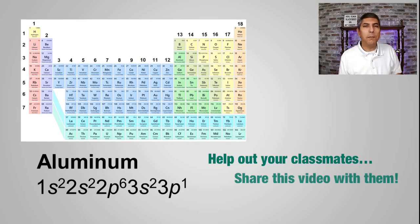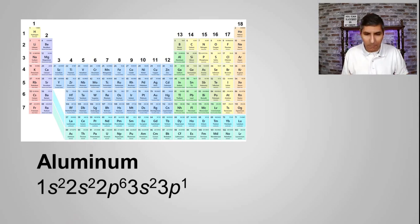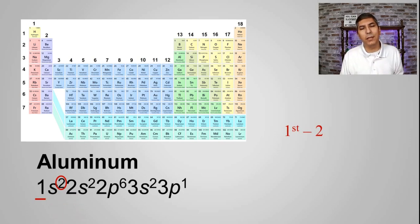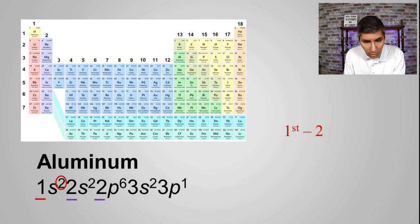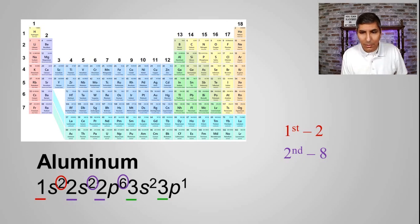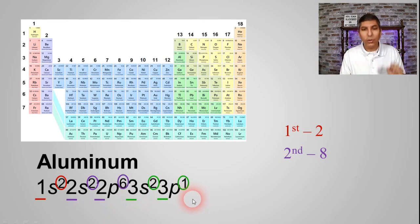This electron configuration serves as a map to tell us where the electrons are located in that atom. For example, the coefficient 1 refers to all the electrons in the first energy level — the superscript 2 tells us the first energy level has 2 electrons. For the second energy level, we look at the values with coefficient 2, and since those superscripts are 2 and 6, that's 8 electrons in the second energy level. For the third energy level, the superscripts 2 and 1 give us 3 electrons. So that's like a map of where the electrons are.